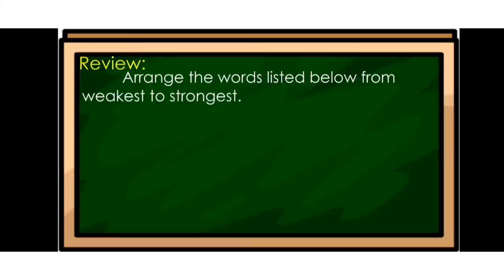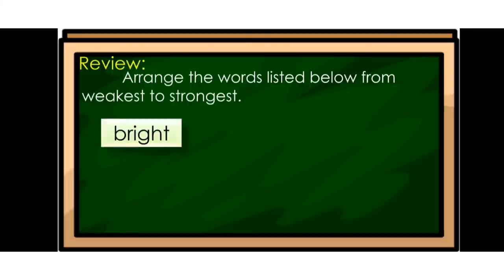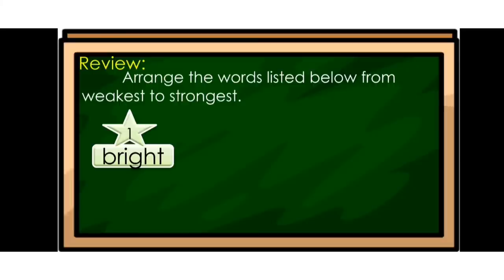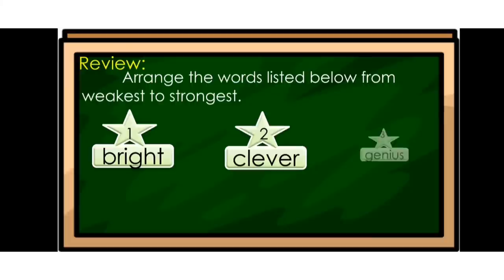Let us have a review based on our lesson last week. You are going to arrange the words listed below from weakest to strongest: bright, genius, and clever. The weakest word is bright, the next one is clever, and the strongest word is genius.